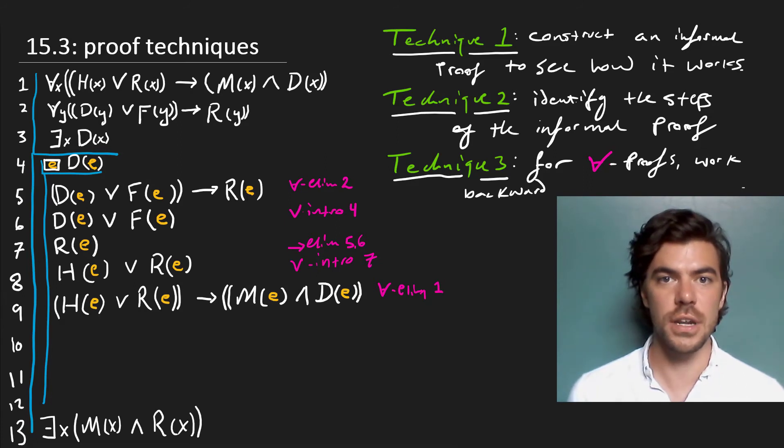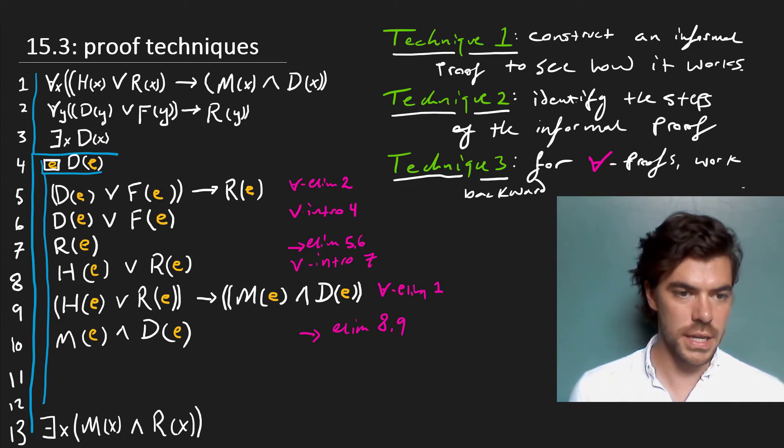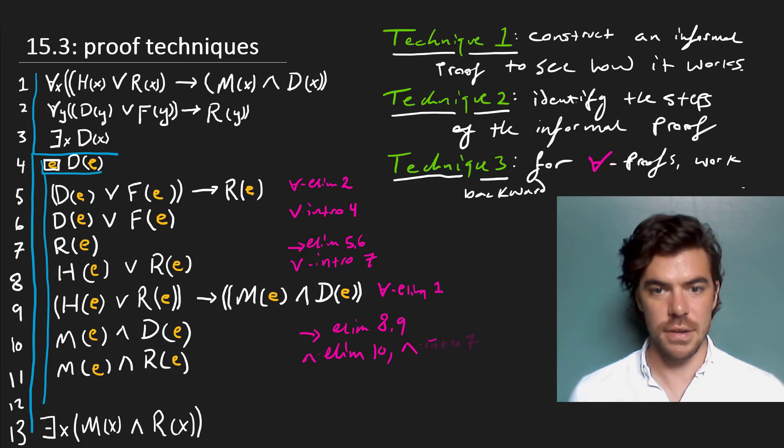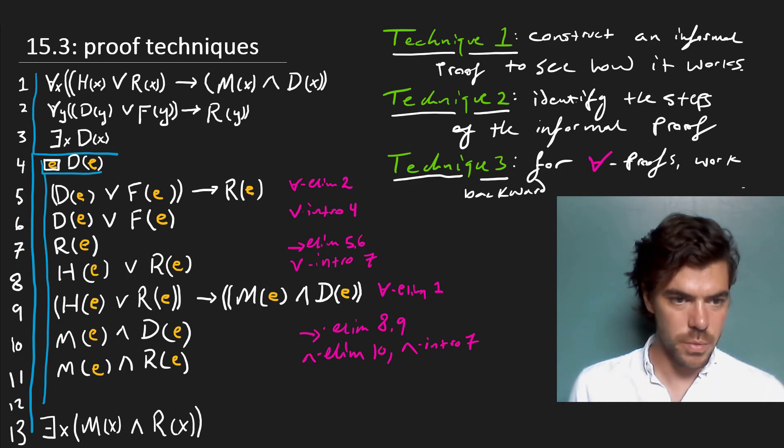Okay, so now it's just another application of modus ponens, which gets us that E is an M and E is a D. For the sake of keeping our proof within the screen, I'm going to combine two simple steps on 11 here to get E as an M and E as an R. Now these two steps are conjunction elimination on 10 and then conjunction introduction from 7. So if we wanted to split out these steps, we would use conjunction elimination to get E as an M and then we'd use conjunction introduction to get E as an M and E as an R, pulling down our E as an R from line 7. This gets us very close to where we want to go.